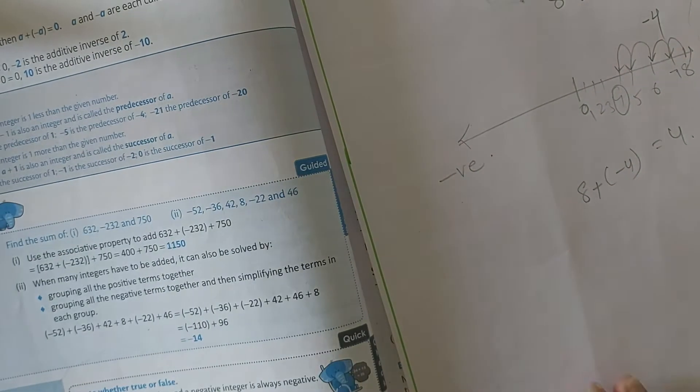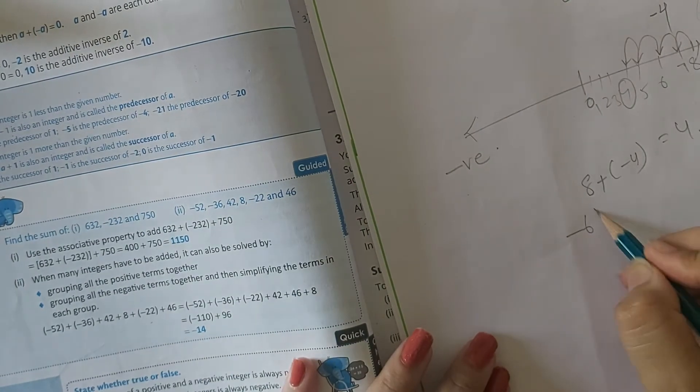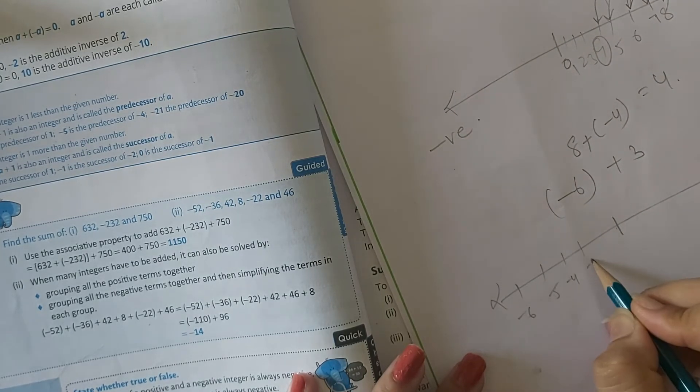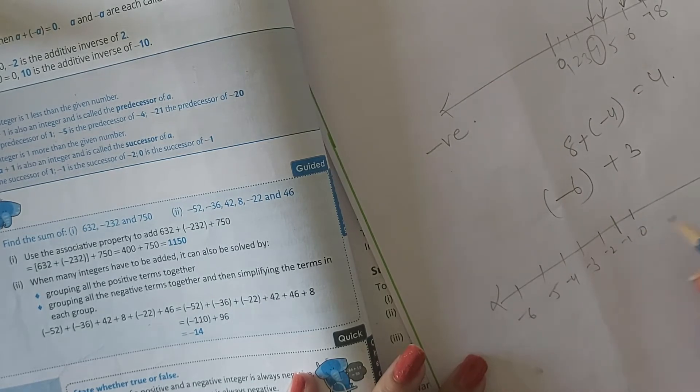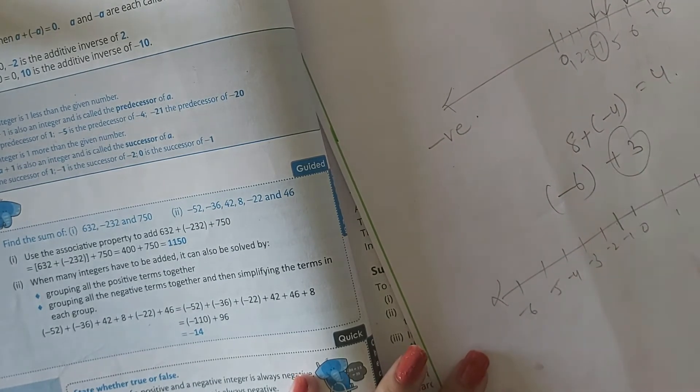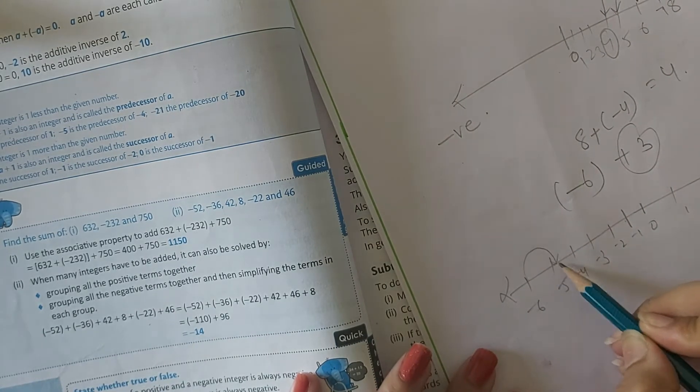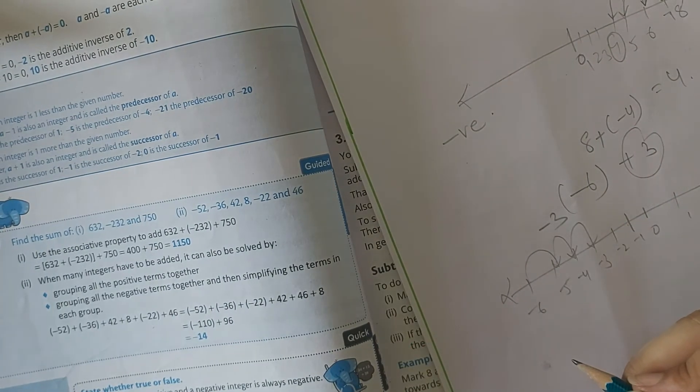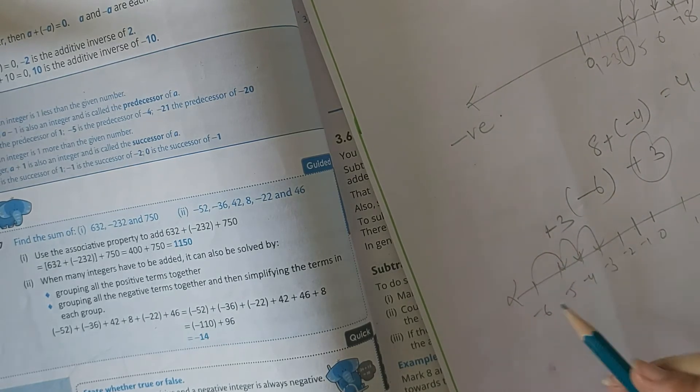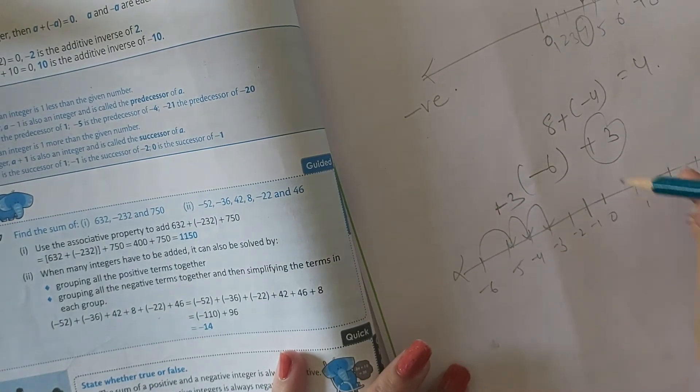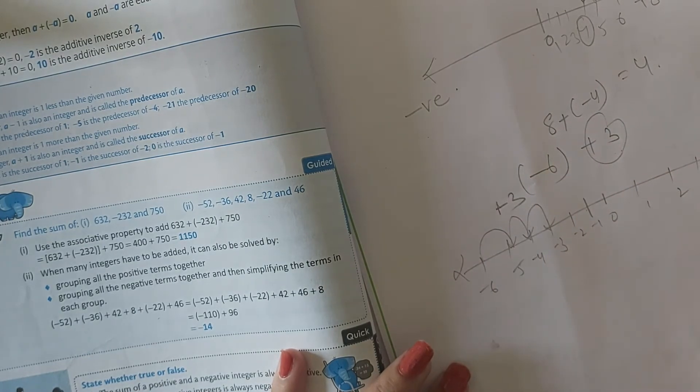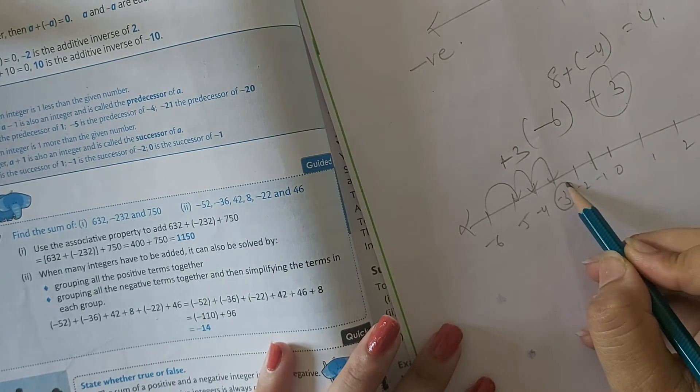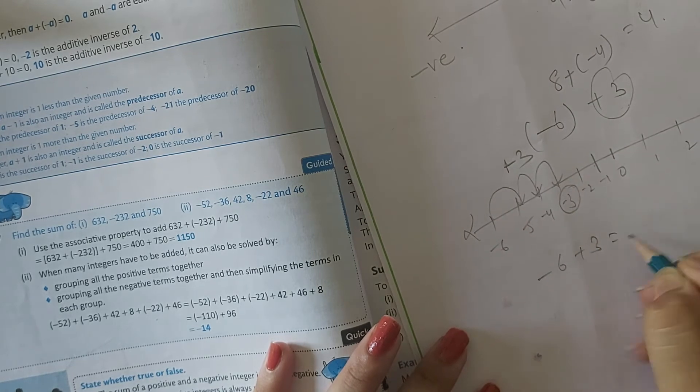Second is minus 6 plus 3. So again draw the number line: minus 6, minus 5, minus 4, minus 3, minus 2, minus 1, 0, 1, 2, 3. Now we have to add plus 3 to minus 6. That would be 1 step, 2 steps, 3 steps. When we are adding a positive number, always move to the right hand side. When we are subtracting a number, always move to the left hand side. So the number comes is minus 3. Our answer is minus 3.